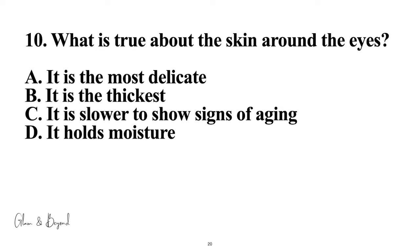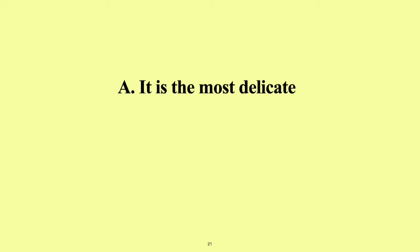Number ten: what is true about the skin around the eyes? A, it is the most delicate; B, it is the thickest; C, it is slower to show signs of aging; D, it holds moisture. The answer is A, it is the most delicate because it is the thinnest.